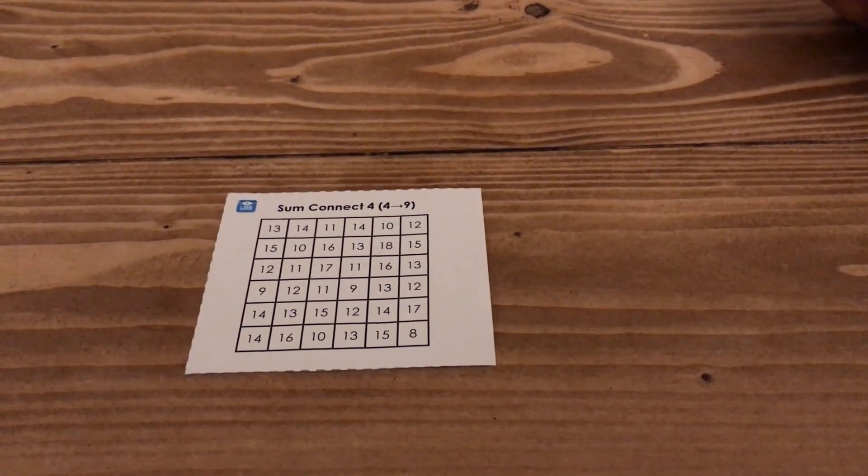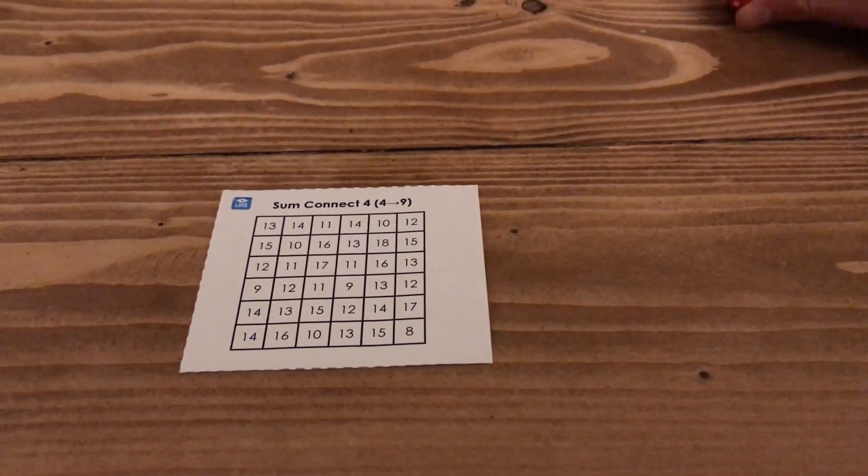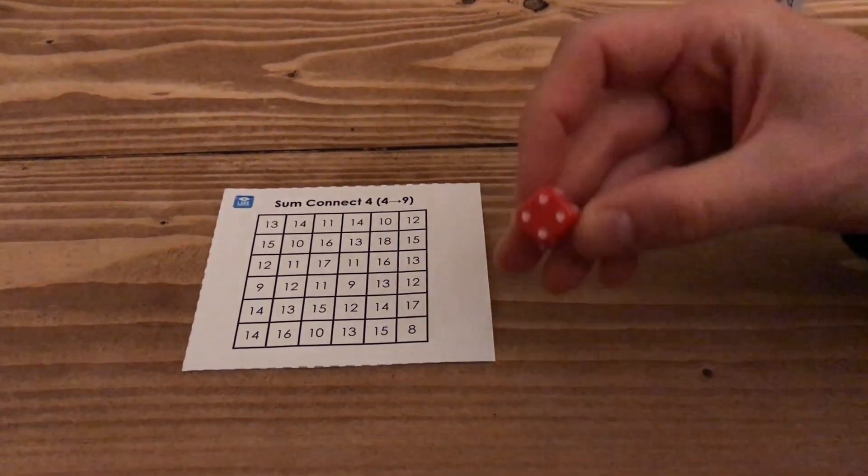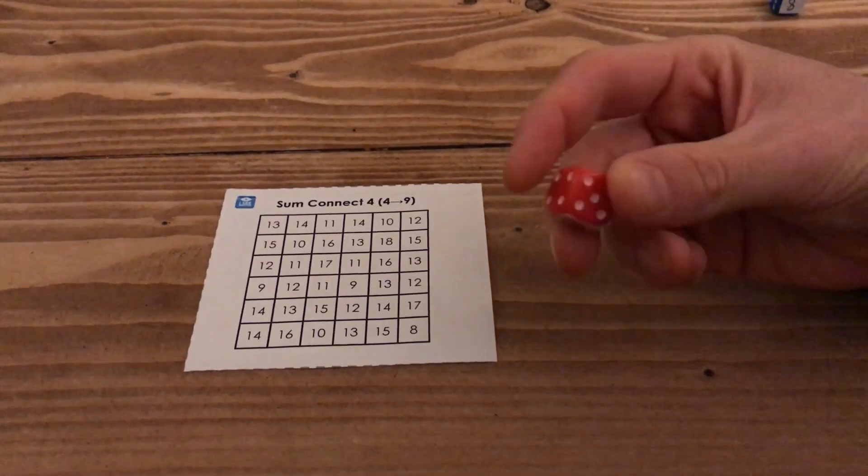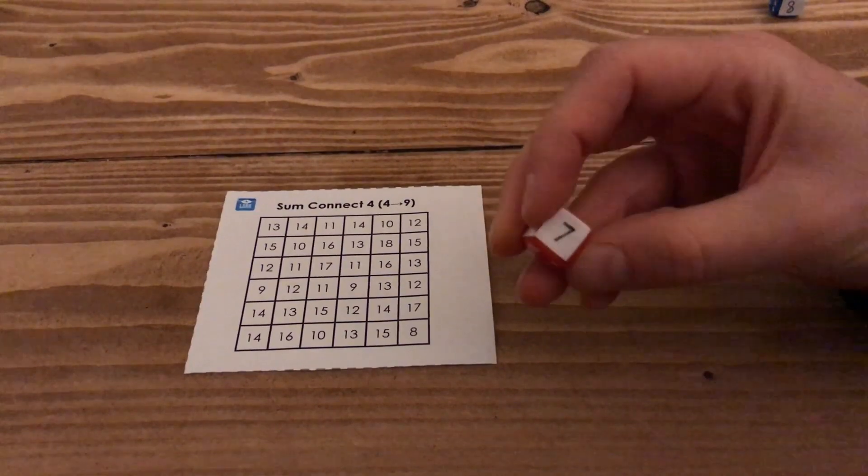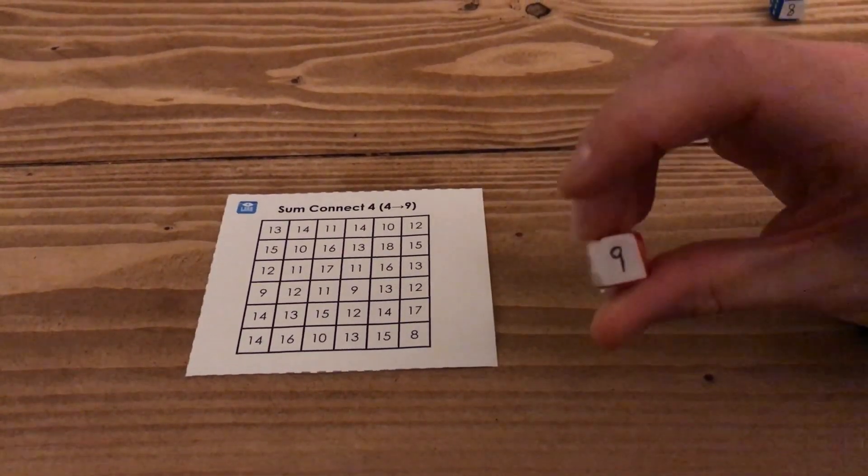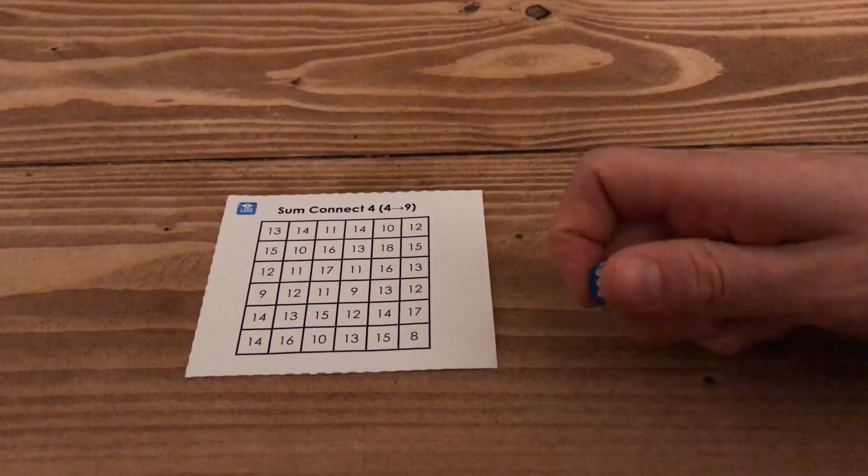So the final version of the game is Sum Connect Four, four to nine. I'm going to show you how you need to adapt the dice to play this game. We need four, five, six, seven, eight and nine on the faces of the dice and that's on both dice.